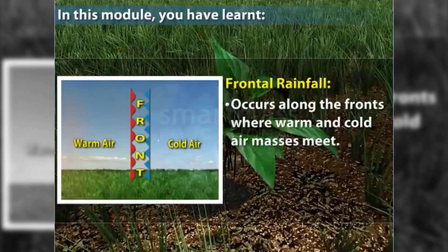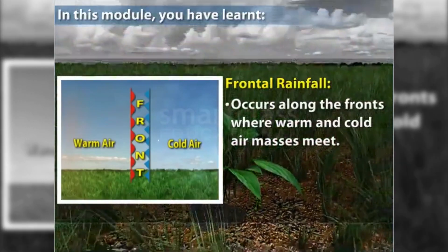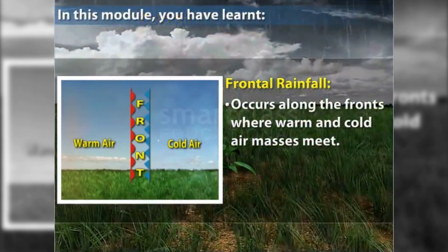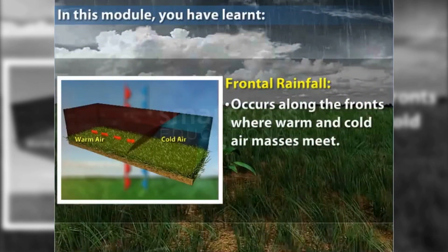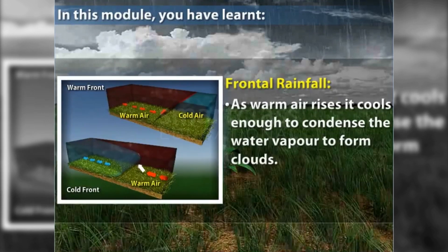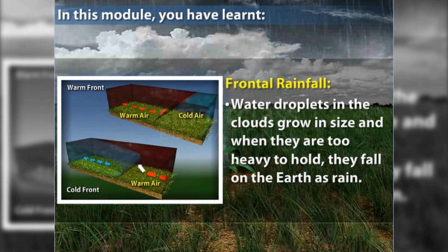In this module you have learned: frontal rainfall occurs along the front where the warm and cold air masses meet. Warm air is lighter and rises over cold air; as it rises, it cools enough to condense the water vapor to form clouds. Water droplets in the clouds grow in size, and when they are too heavy to hold, they fall on the earth as rain.